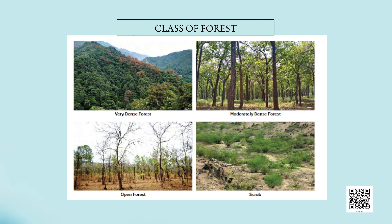To understand the distinction among these forest classes, observe the images carefully. In very dense forest the canopy is very thick and sunlight does not penetrate to the ground. In moderately dense forest the canopy is not so thick and tree density is also less. Scrub is a type of vegetation associated with poor soils in semi-arid environments, where plant growth is stunted or specially adapted to seasonal drought.